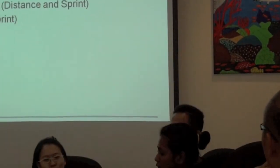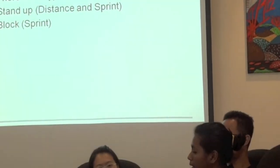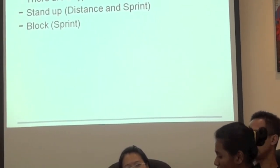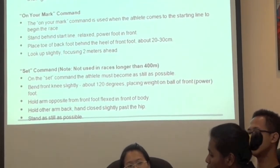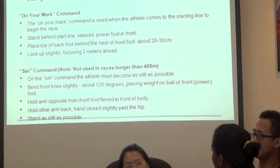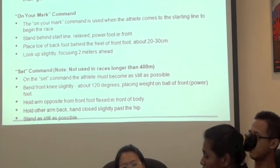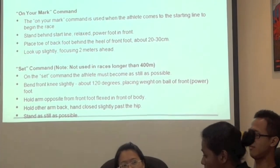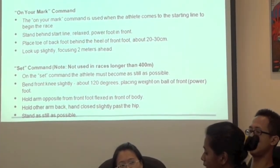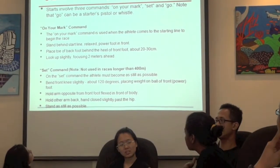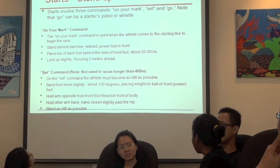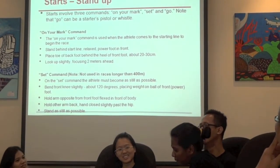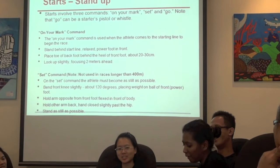There are two types of start. One is stand-up, which is for distance and sprint, and dock, which is just for sprinting. For starts, it would be standing up. The start involves three commands: on your mark, get set, and go. The go command can be started with a pistol or whistle — in this case, using a whistle.